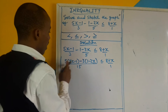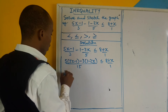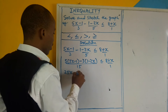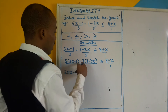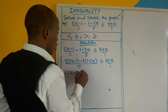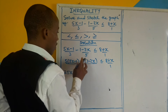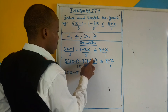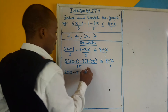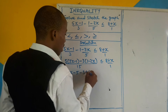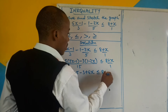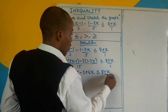Now let's open up. 5 times 5x is 25x. 5 times negative 1 is minus 5. Negative 5. Minus 3 times 1 is negative 3. Minus 3 multiplied by minus 2x gives us positive 6x. Is less than or equal to 8 plus x over 1.